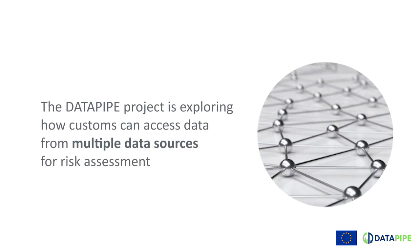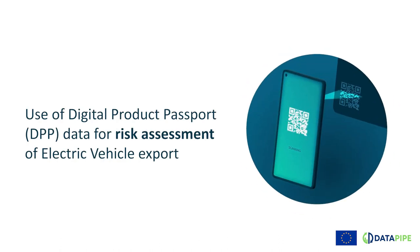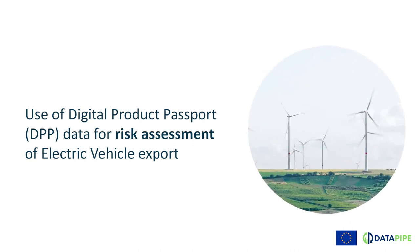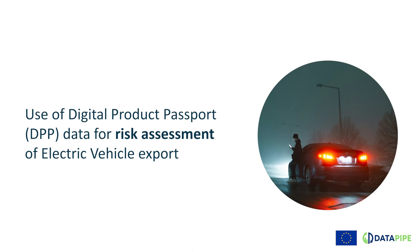In Datapipe, we explore how authorities can access and use external business data sources for various purposes. The challenge is that this data is stored in the digital infrastructures of different businesses. In this imaginary scenario, we explore how digital product passport, or DPP, information could be used in customs risk analysis — for example, to address environmental concerns.